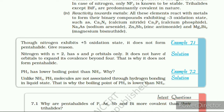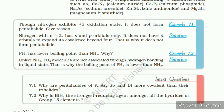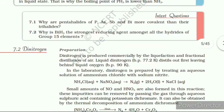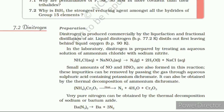Dinitrogen combines with dioxygen only at very high temperatures to form nitric oxide: N₂ + O₂ → 2NO. Uses: The main use of dinitrogen is in the manufacture of ammonia and other industrial chemicals containing nitrogen. It is also used where an inert atmosphere is required. Liquid nitrogen is used as a refrigerant to preserve biological materials, food items, and in cryosurgery. Example 7.3: Thermal decomposition of sodium azide: 2NaN₃ → 2Na + 3N₂.